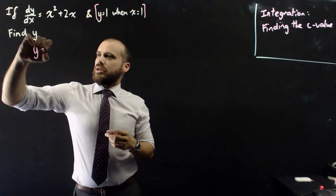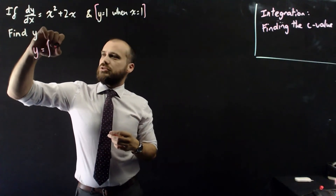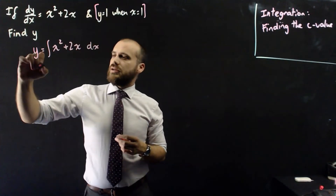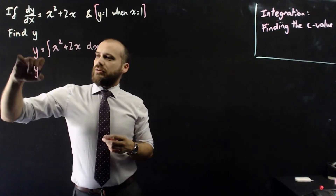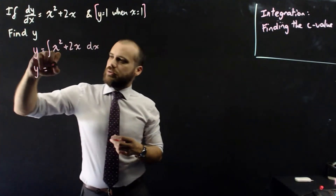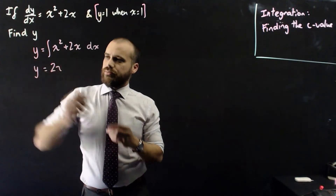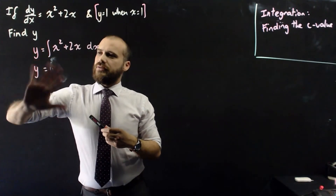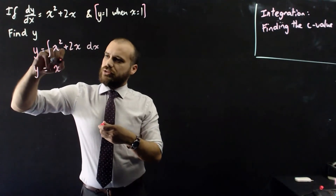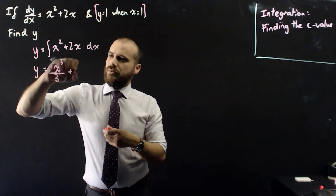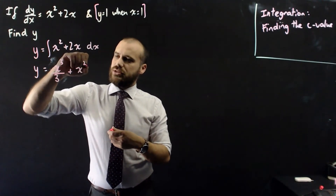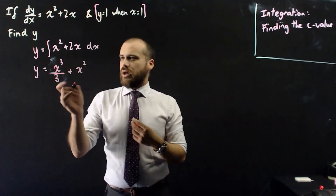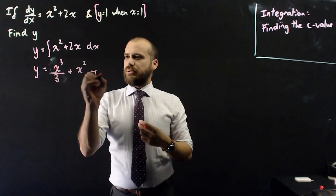We know that y equals the integral of x squared plus 2x with respect to x. Therefore y equals x cubed over 3 plus x squared — since 2 divided by 2 is just 1 — and then we have plus c on the end.